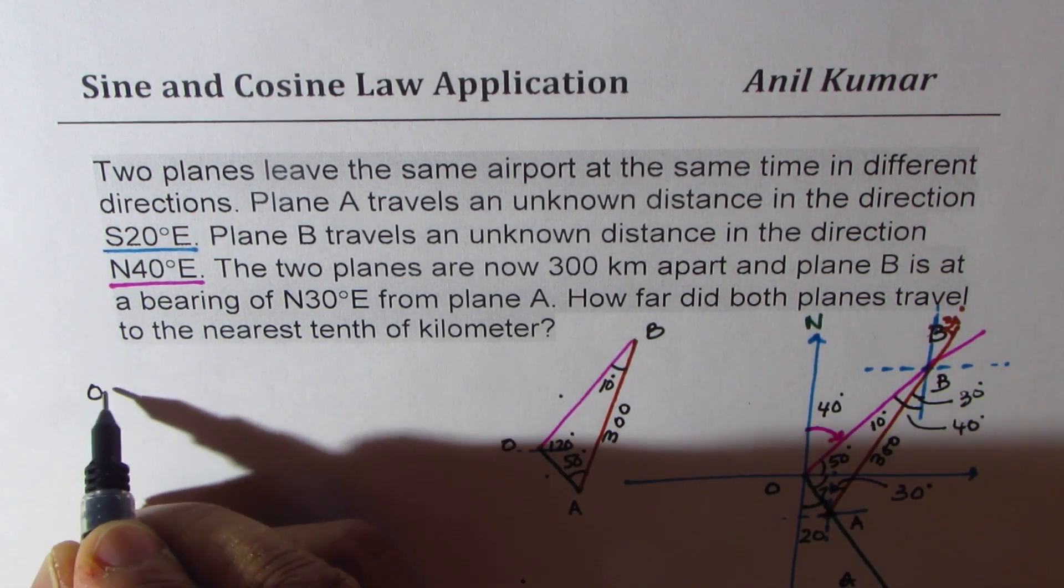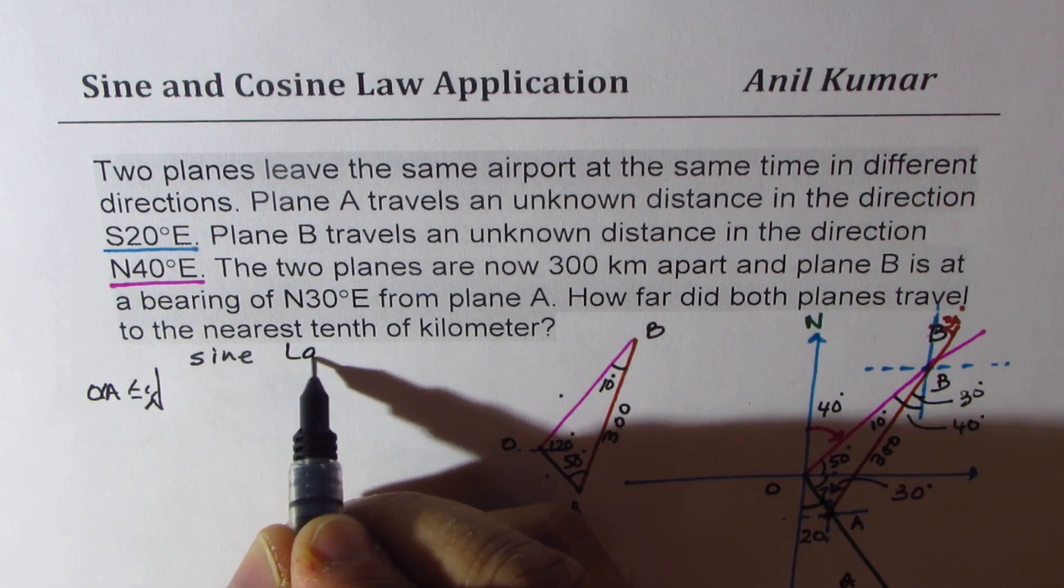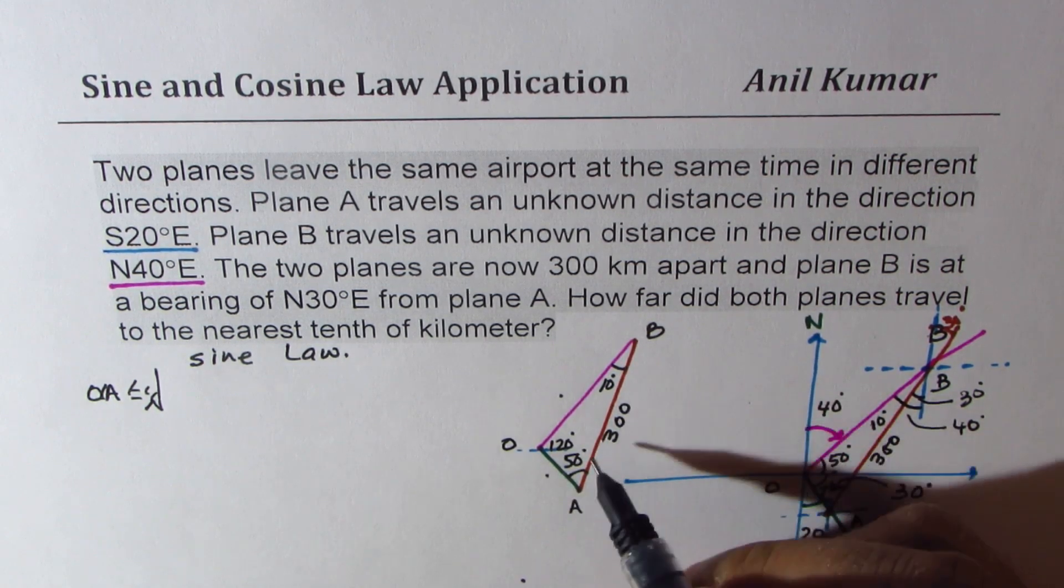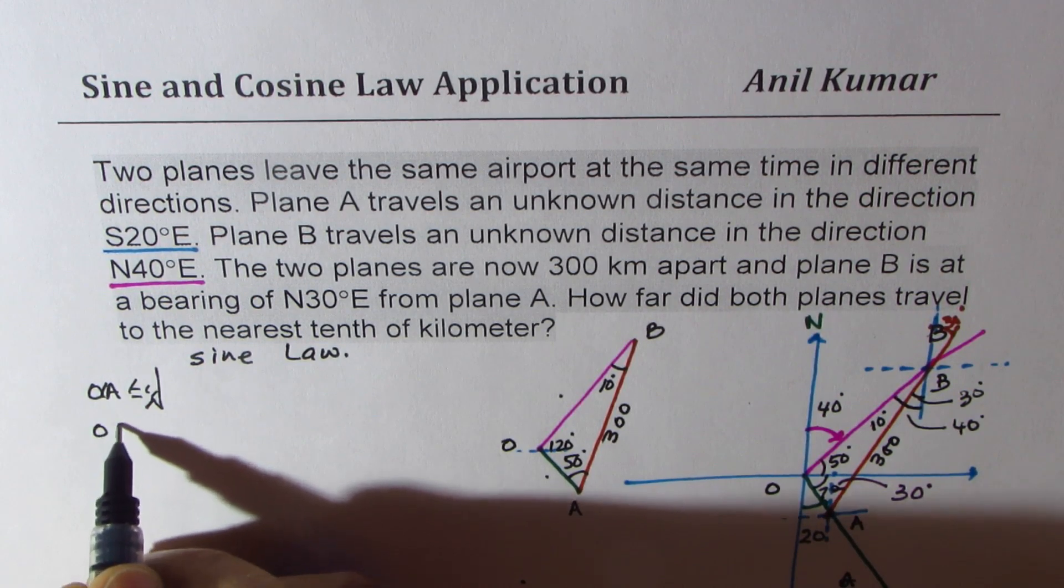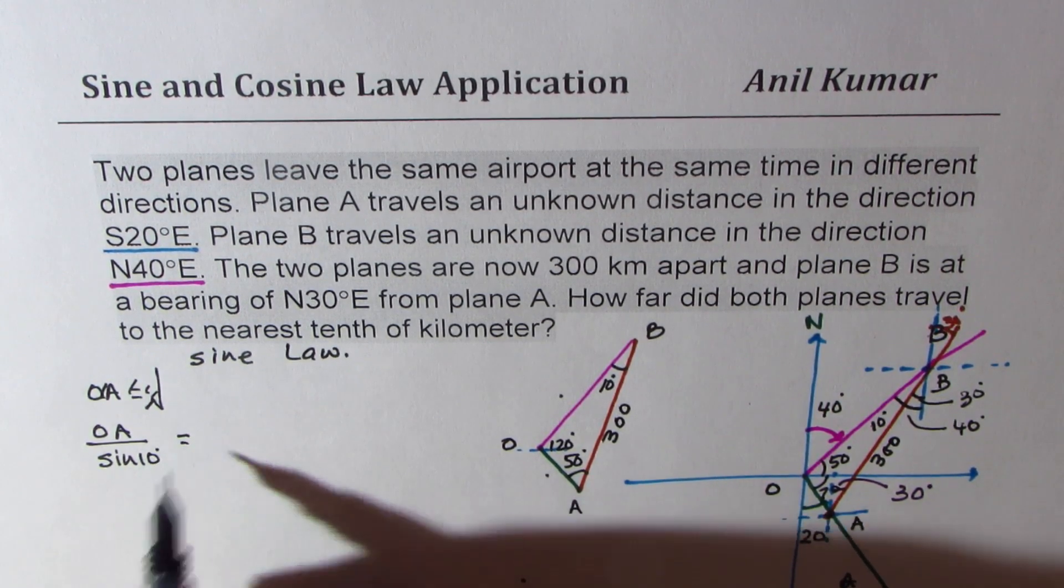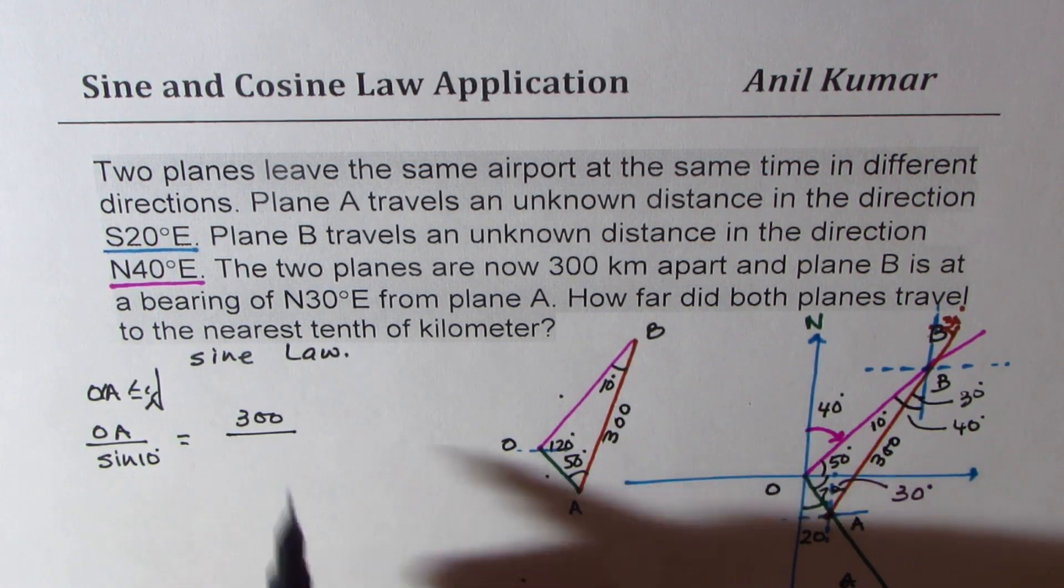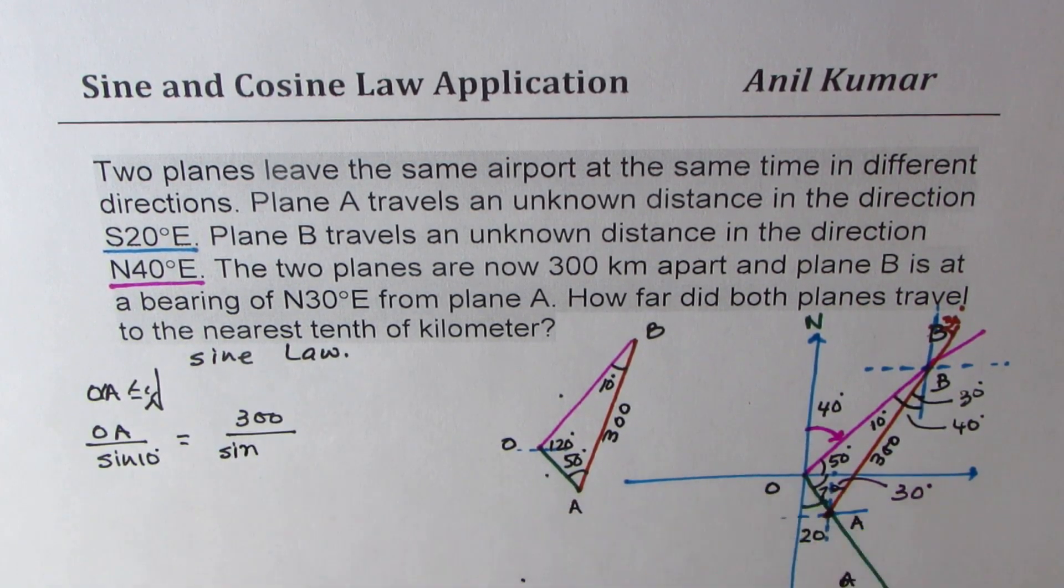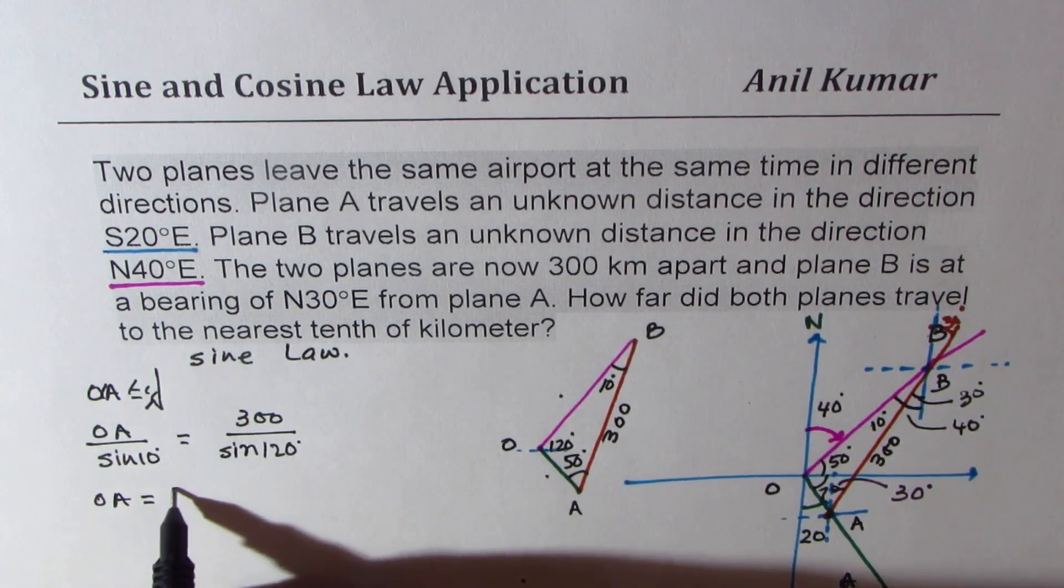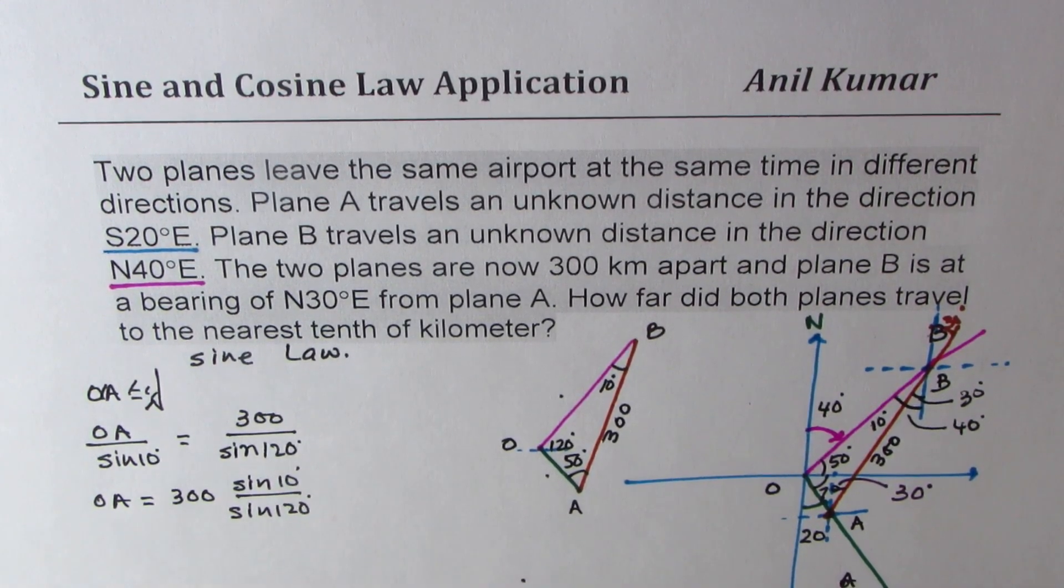So for plane A, that is distance OA, we have to apply sine law. Since we know one combination, that is side and opposite angle, now we can find the other sides. So to find OA, we could write this as OA over sine of 10 degrees. That should be equal to what is known to us, the side AB, which is 300, over sine of 120 degrees. So that gives you OA equals to 300 times sine of 10 degrees divided by sine of 120 degrees.